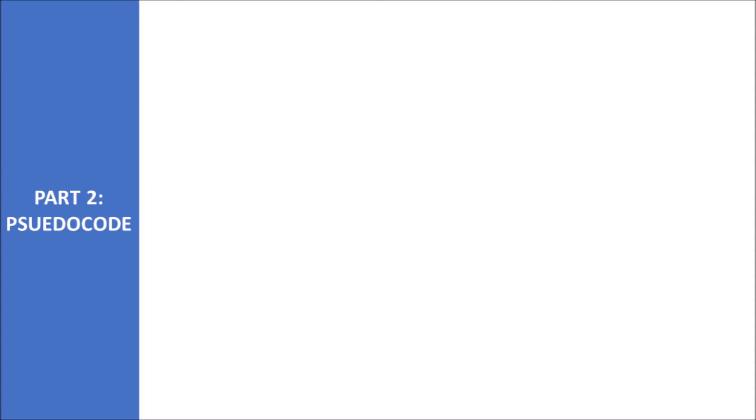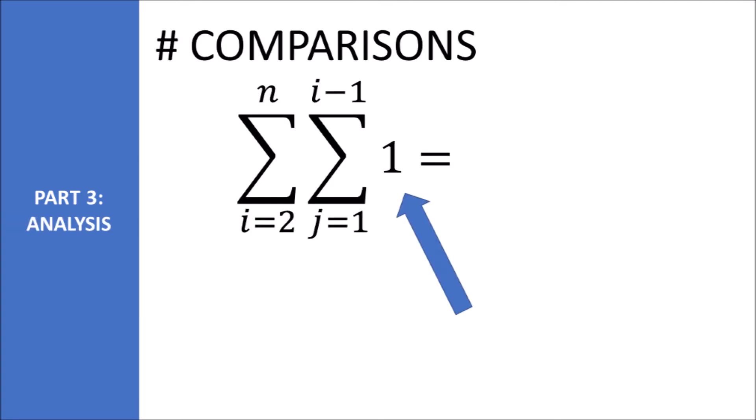Now let's calculate the number of comparisons. We perform one single comparison inside the inner loop. We iterate through the inner loop, we start at iteration one, we end at iteration i-1. This results in this summation where we add one comparison for each iteration from j equals one to j equals i-1.